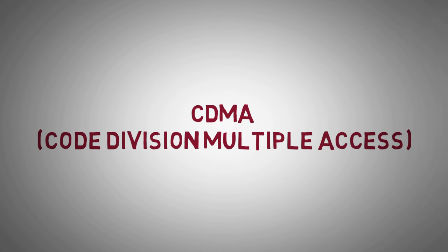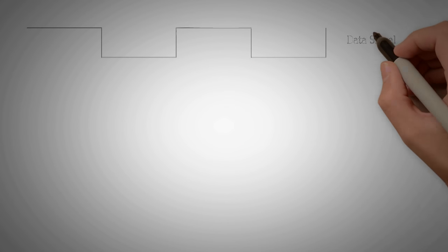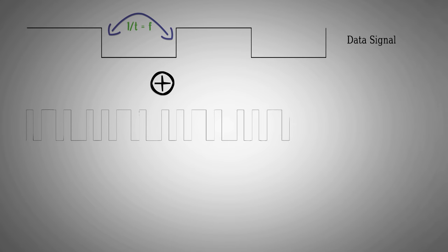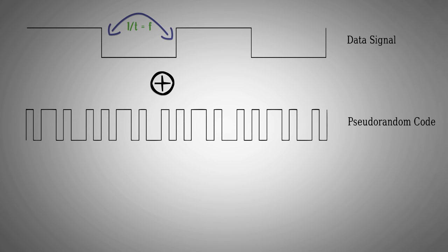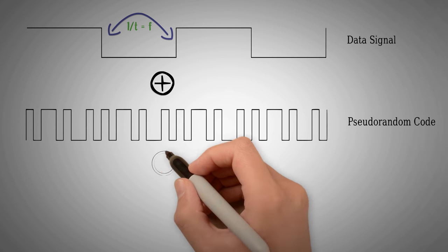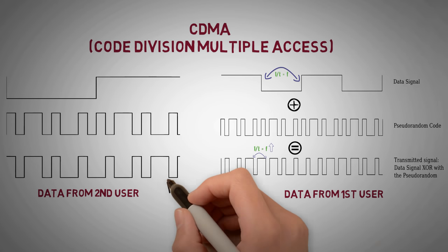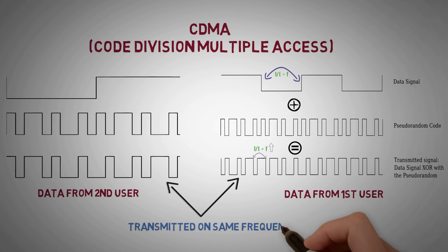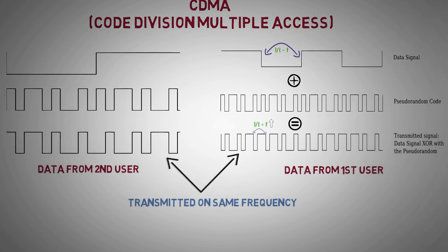CDMA, based on code division multiplexing, is a technique in which the data bits are modulated by a high-frequency orthogonal sequence of bits such as Walsh codes or pseudo-random codes such as gold codes to spread the signals over a large frequency band. Multiple such signals from different users are then transmitted over the same frequency band.